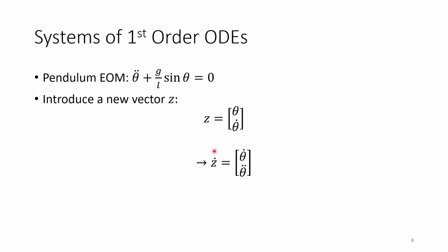If we take the derivative of Z, Z dot, we get theta dot in the first row, and theta double dot in the second row. We introduced Z as a new variable, so now we need to write Z dot in terms of Z, instead of in terms of theta dot and theta double dot.